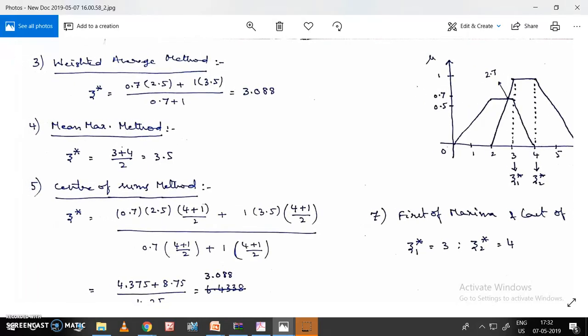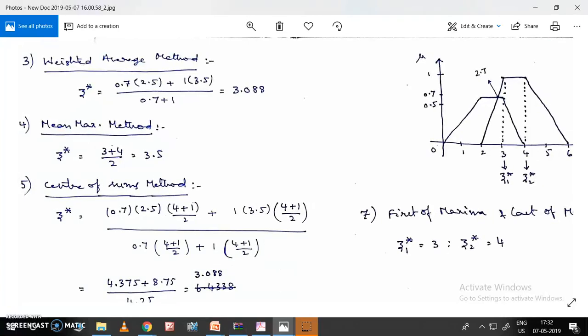After finishing two methods - max membership method and centroid method - let us move on to the third one: weighted average method. In this method, we use the maximum value from each fuzzy set.